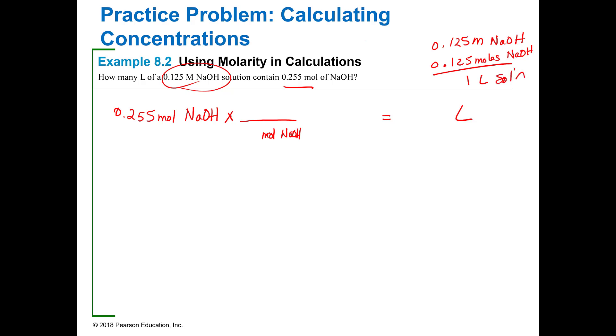So the concentration of this is 0.125 moles of sodium hydroxide in one liter. When I put that in there, that gets rid of moles of sodium hydroxide and I'm going to be left with liters of sodium hydroxide, which is what I'm looking for, and that should be approximately 2.04 liters of sodium hydroxide.